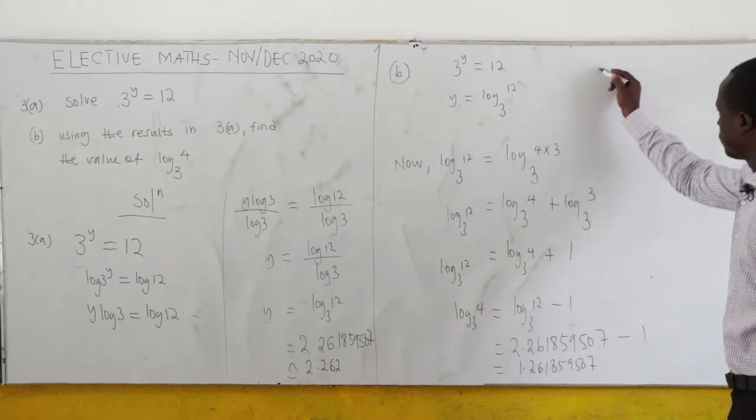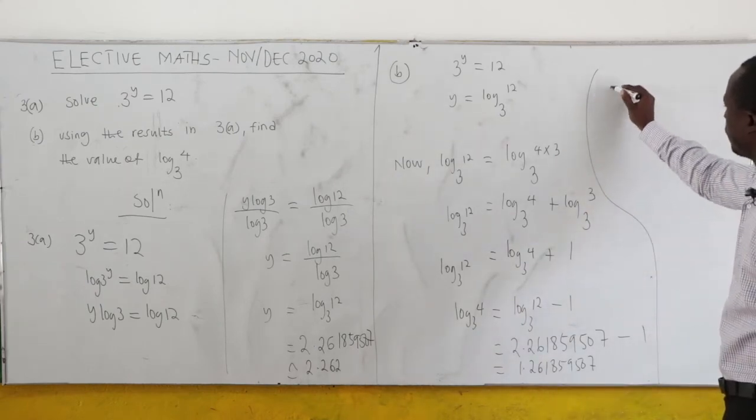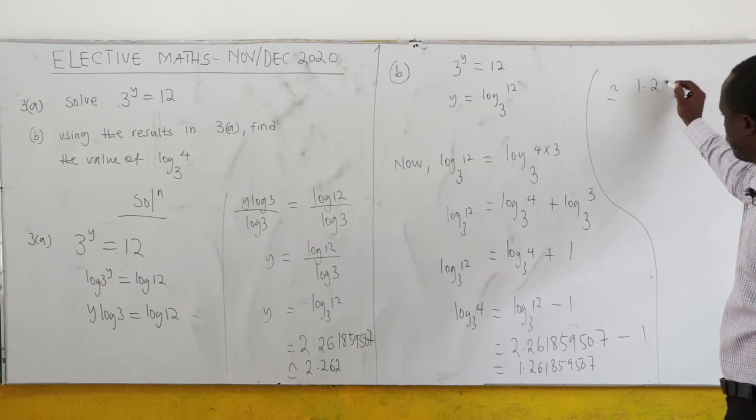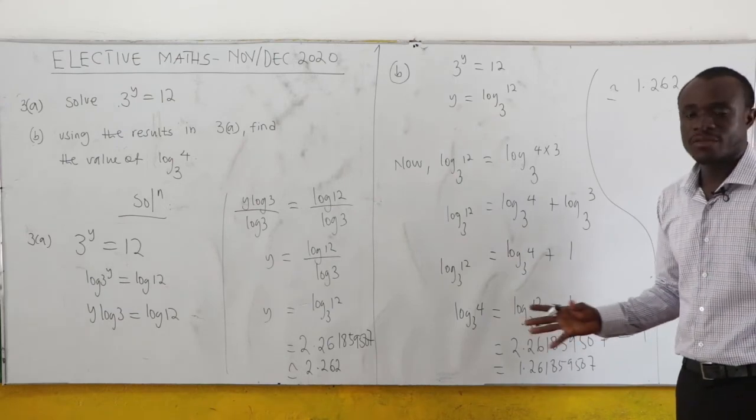And when you change this to 3 decimal places, this will be equivalent to 1.262. And this is the value of log₃4.